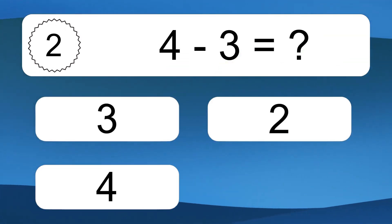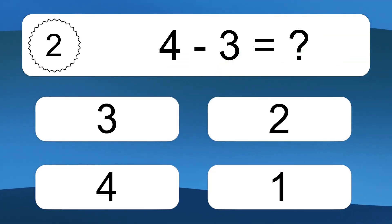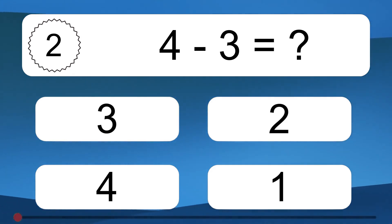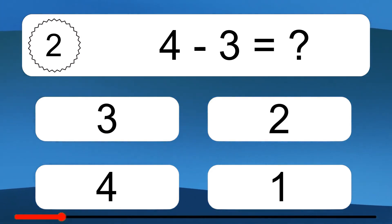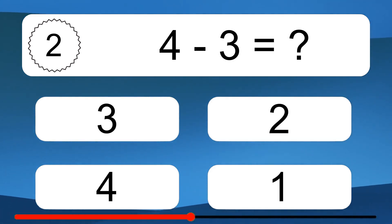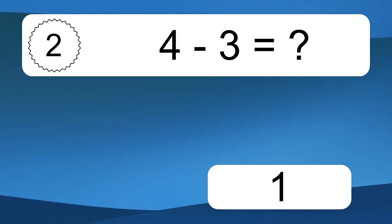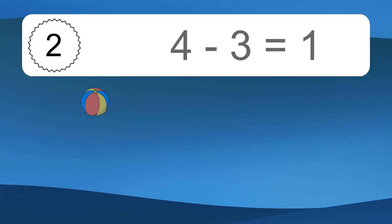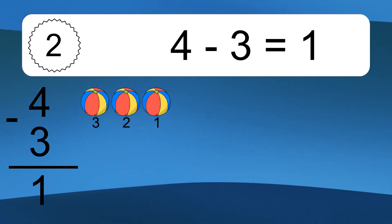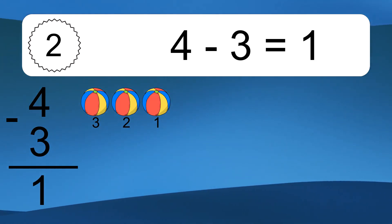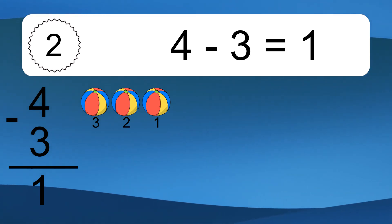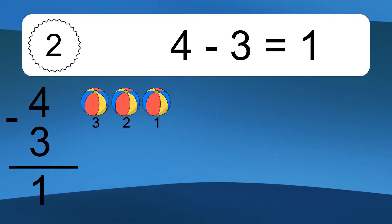4 minus 3 equals what? 4 minus 3 equals 1. Let's count it: 3, 2, 1.